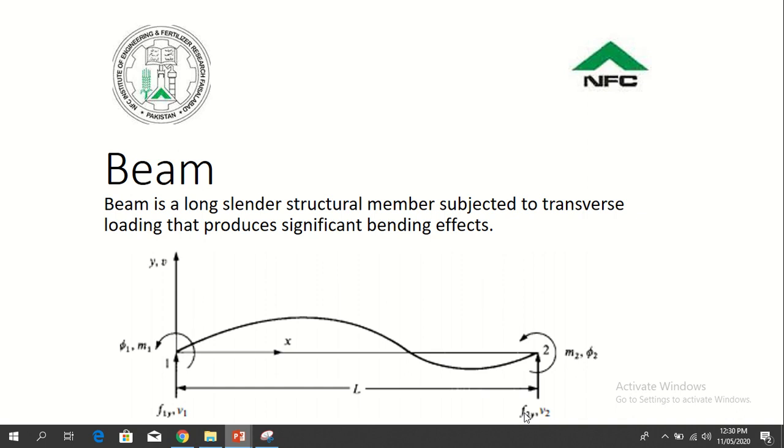There are two types of loading in the beam. First is the vertical load which produces vertical displacement. Second type of load is the moment m2, which represents moment, and phi2 represents the rotational displacement.